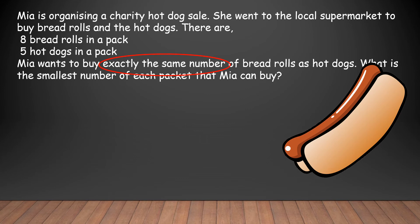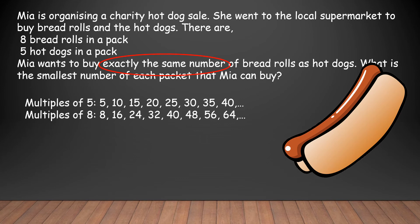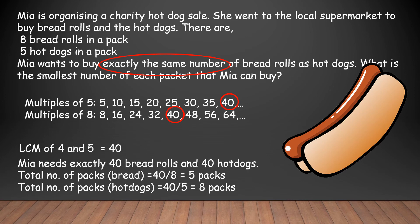So firstly we write down the multiples of 5 and 8, and then find the least common multiple. We can see that 40 is the LCM of 8 and 5, meaning Mia needs exactly 40 bread rolls and 40 hot dogs. But the question asks for the number of packs, so we divide 40 by 8 to find how many packs of bread rolls Mia needs, and divide 40 by 5 to find the number of packs of hot dogs she needs to buy.